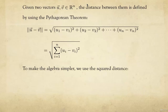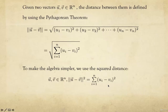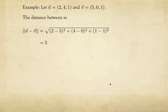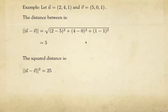To make the algebra simpler, we're going to use the squared distance — simply squaring the expression so there's no square root. The squared distance between two vectors is the sum of the squares, which will be easier when we do calculus later. For example, given vectors u and v, the distance is sqrt((2−5)² + (4−0)² + (1−1)²) = 5, so the squared distance is 25.